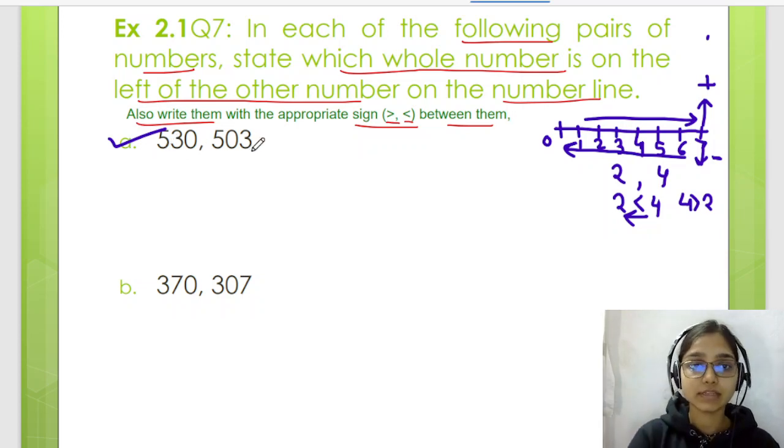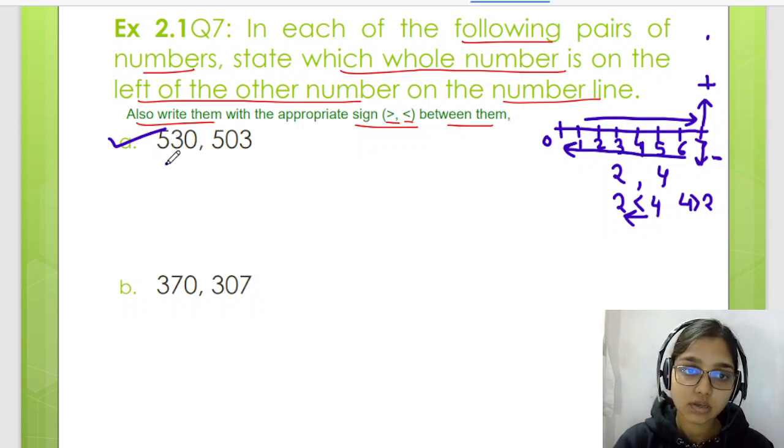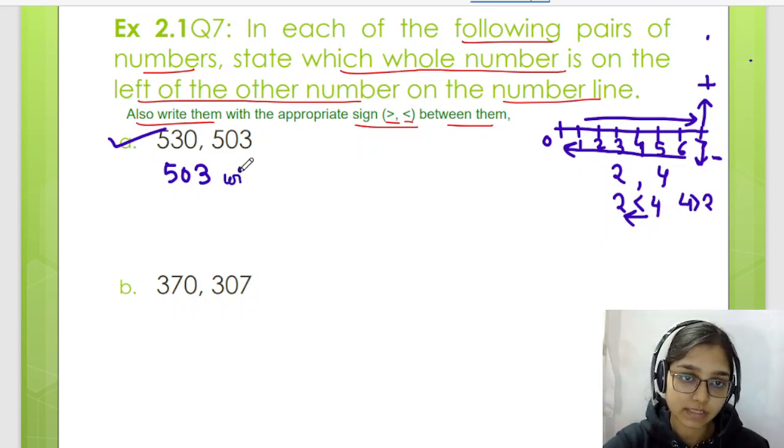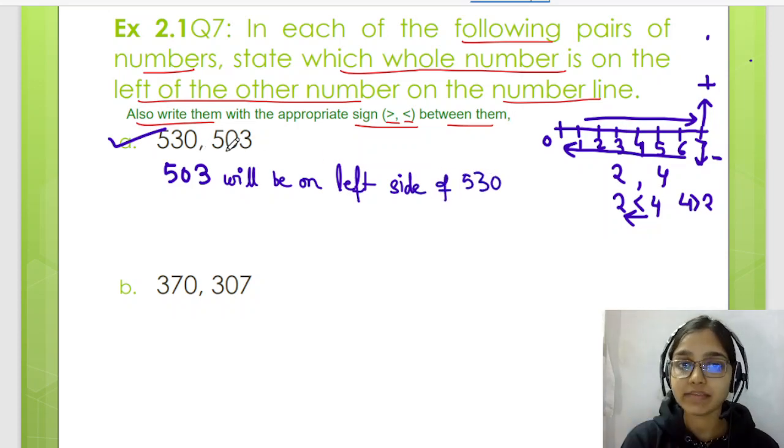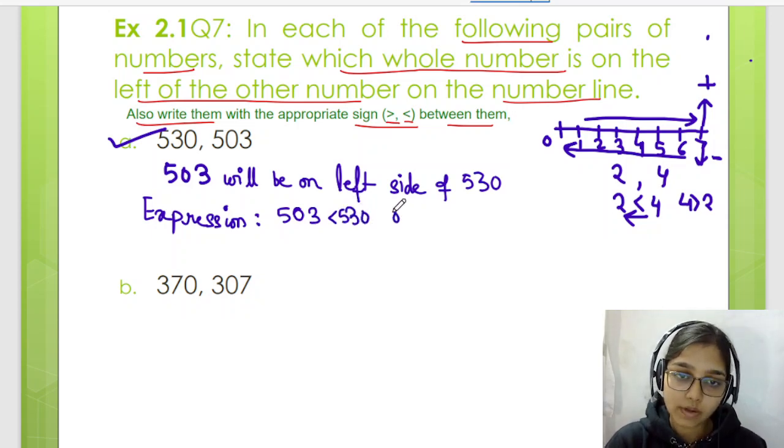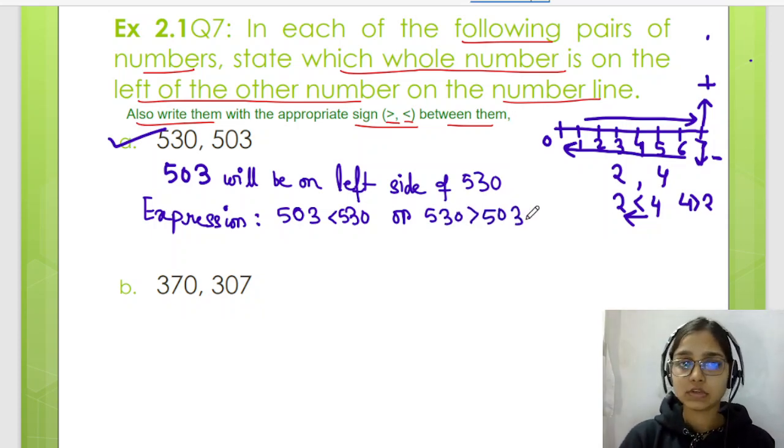Let's start with question number A: 530, 503. In both, which number is small? 503, as compared to 530. So 503 will be left on the number line. 503 will be on the left side because we can see 503 is smaller than 530. And the expression would be 503 less than 530, or 530 is greater than 503. With this we are done with question number A.